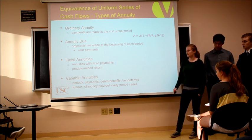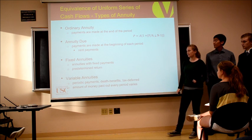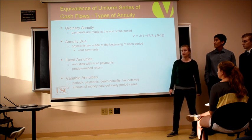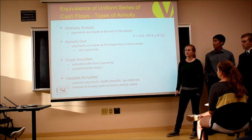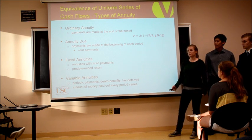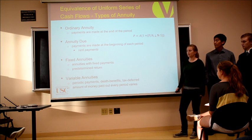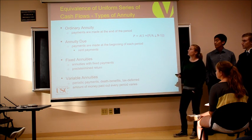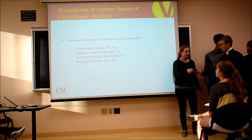And there are variable annuities, where the benefits include periodic payments, death benefits, and tax deferral, but the amount paid out each period varies. So you might put in $200 but sometimes get back $50, $75, or $80, depending on the day. I'll pass it over to Victor to give a few examples of factors.